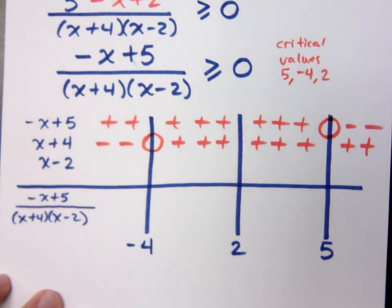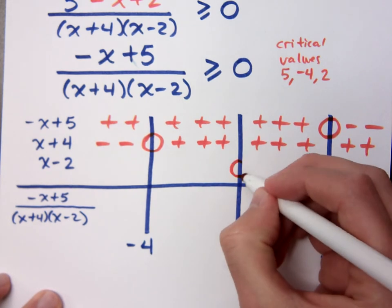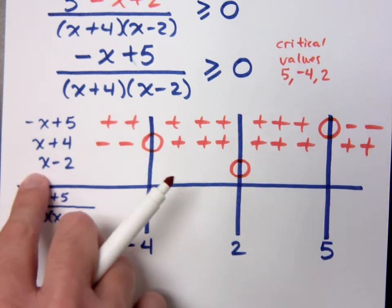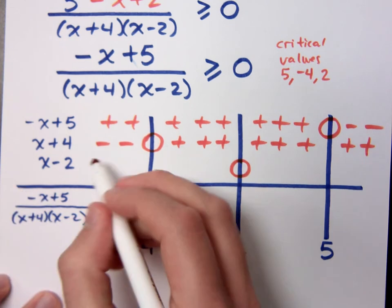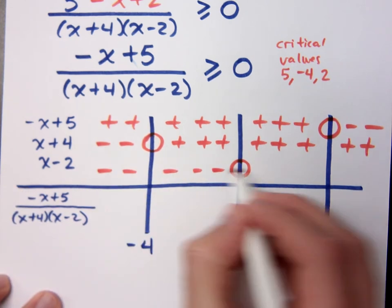And x minus 2. Who is his gatekeeper? 2. So we're 0 at 2. This has a positive coefficient, so what are your signs on the left? Negative. And what are they on the right? Positive.